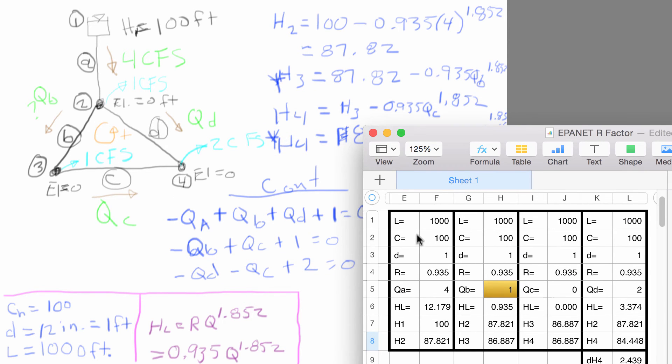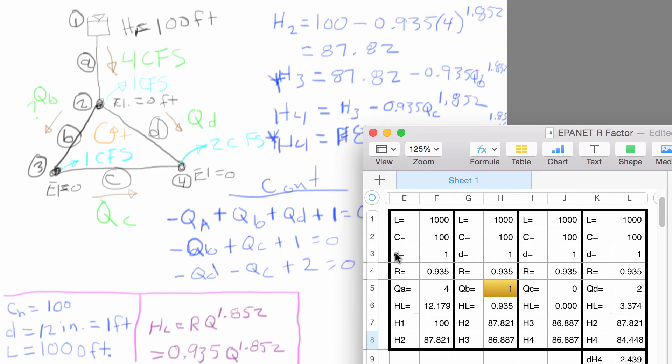I've set up this spreadsheet here with all of these equations in it, and we can see that we've got four CFS flow at A, and we know that we have a head loss of 12.2 feet, and thus we have a head at 2 of 87.82. So we also have the head loss equation written for pipe B, C, and D.